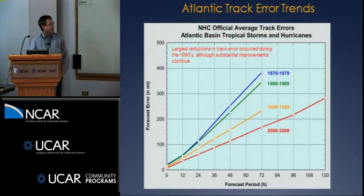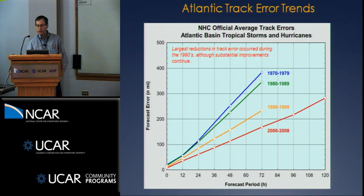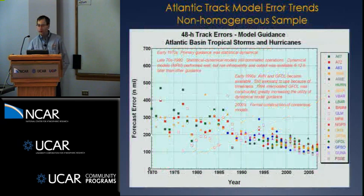Looking at some trends going back to 1970, these are average NHC official forecast errors over time. In the 70s and 80s there wasn't a great deal of improvement. There was a big improvement in the decade of the 90s, not quite so much in the current decade but still substantial. We'll look at that in a little more detail in terms of the models.